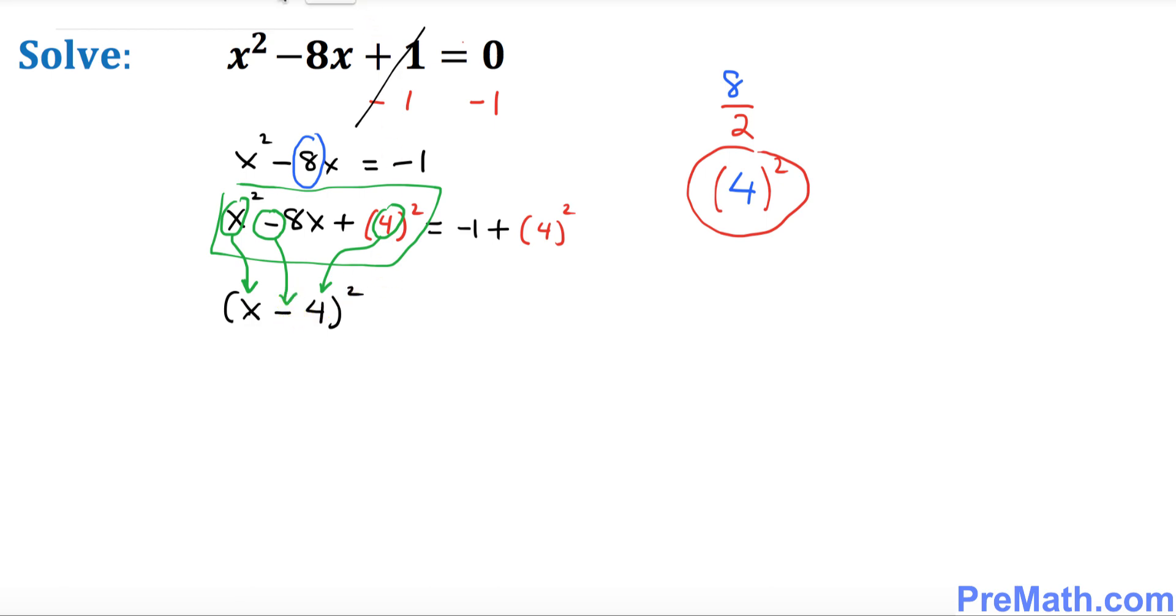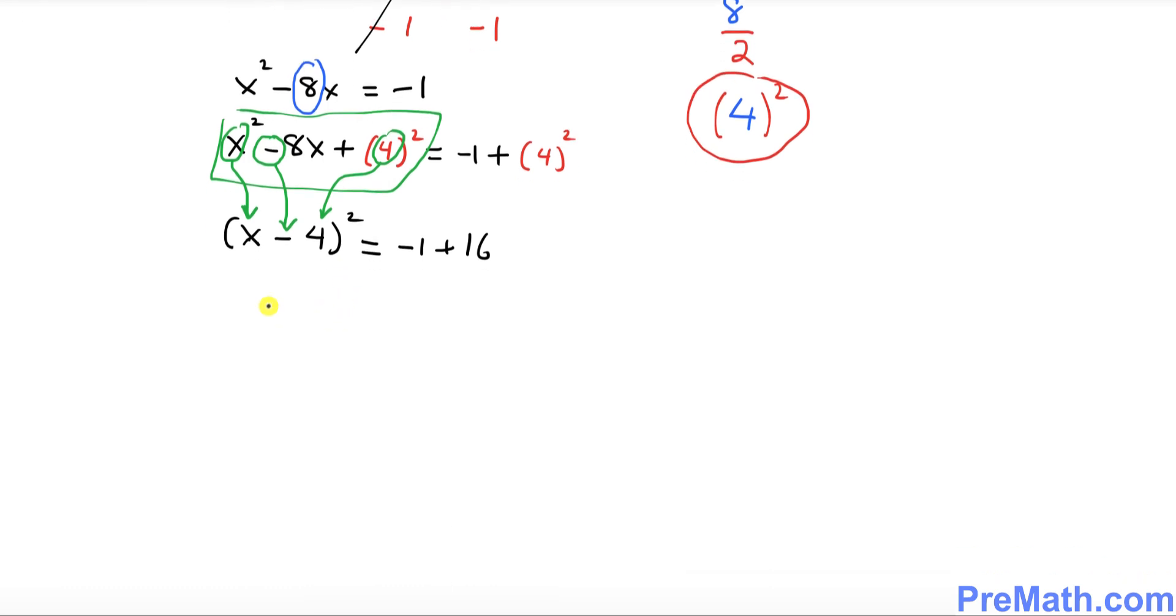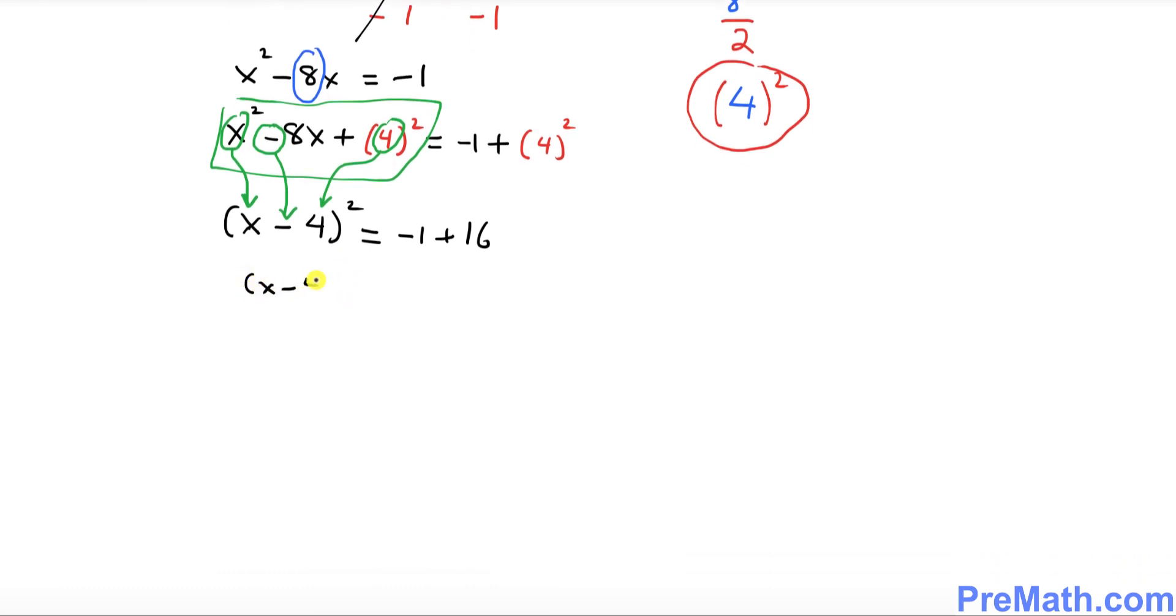And now on the right hand side, negative 1 plus 4 squared is 16. So this simply becomes x minus 4 squared equals positive 15.